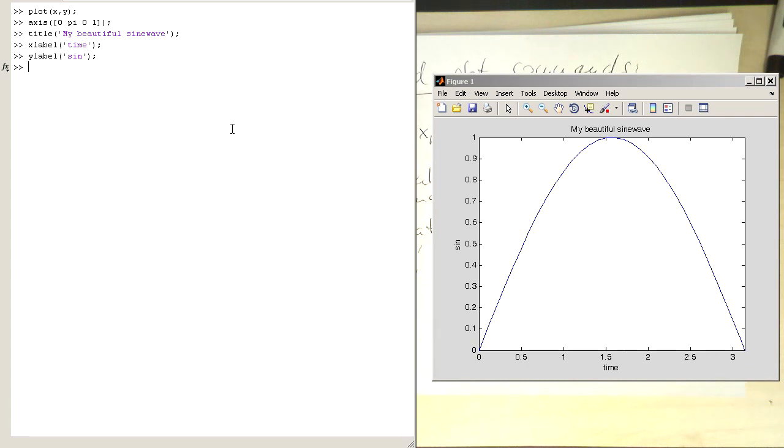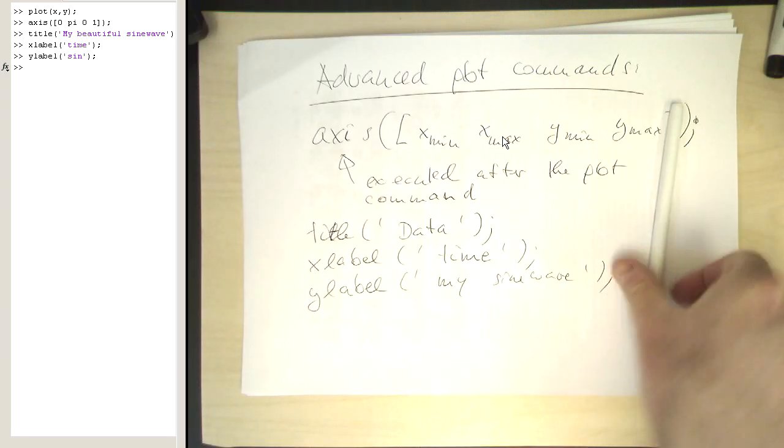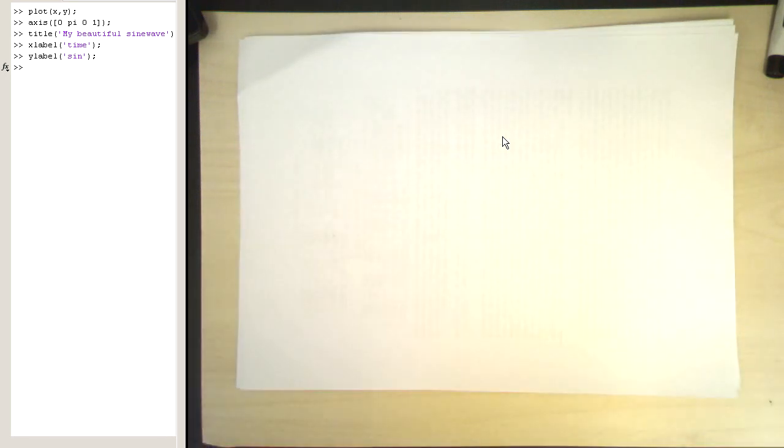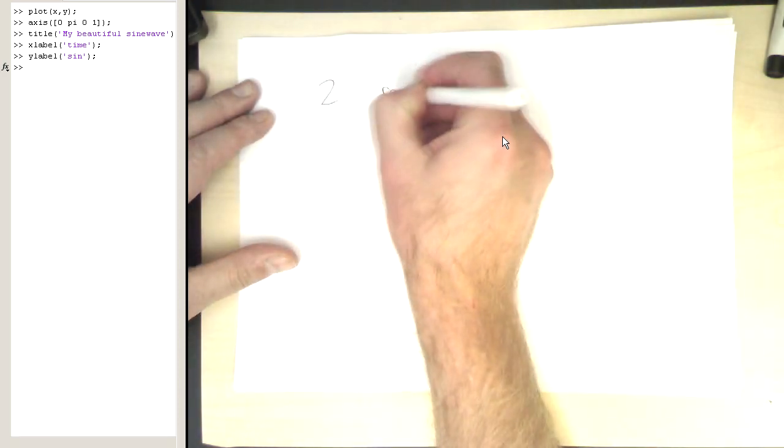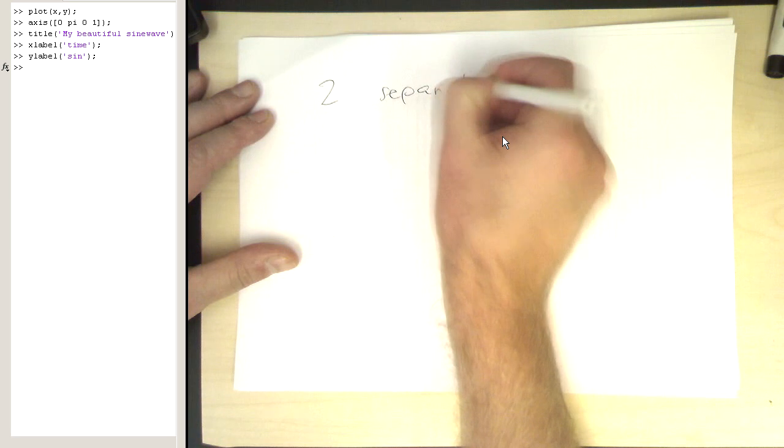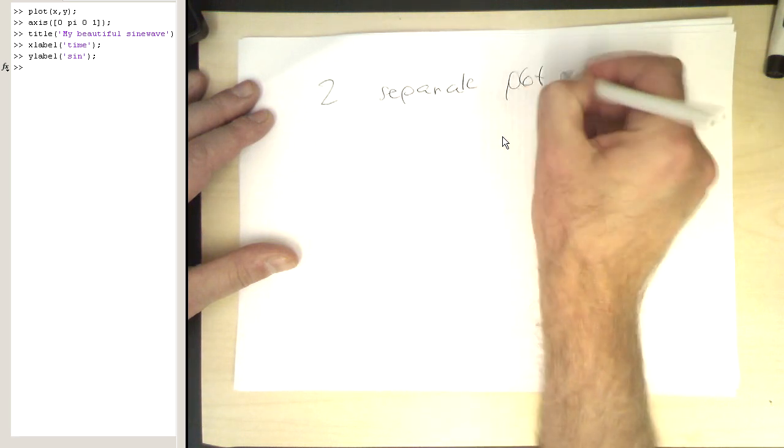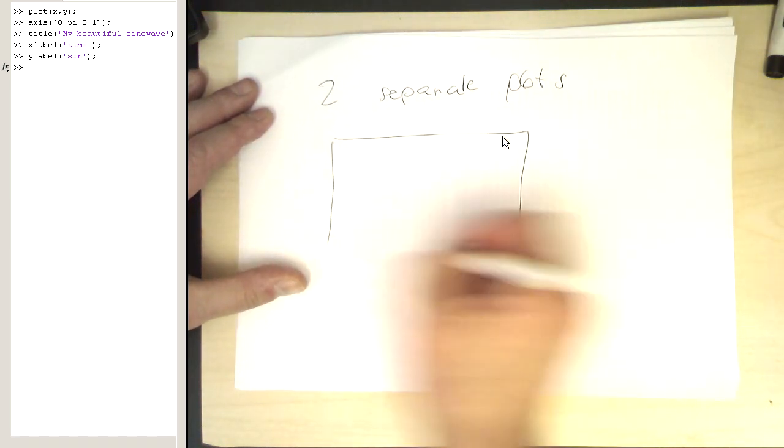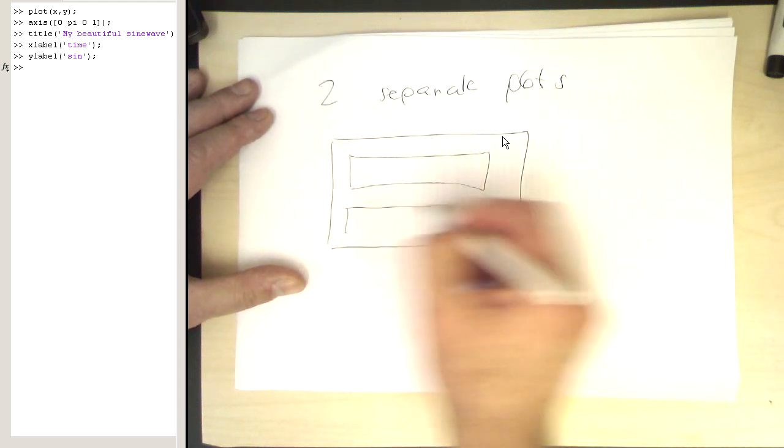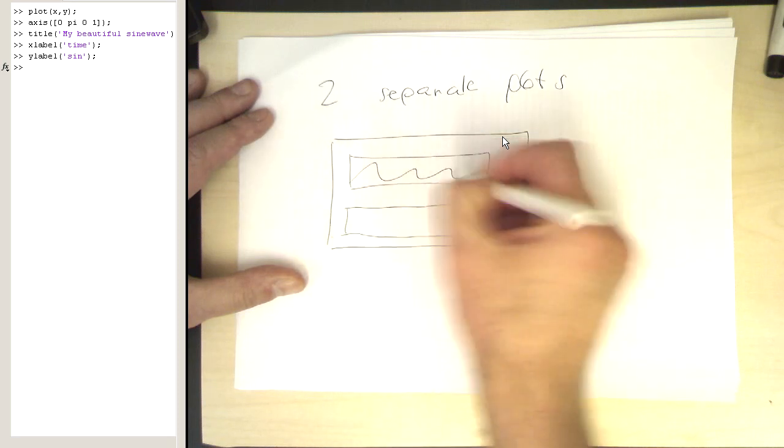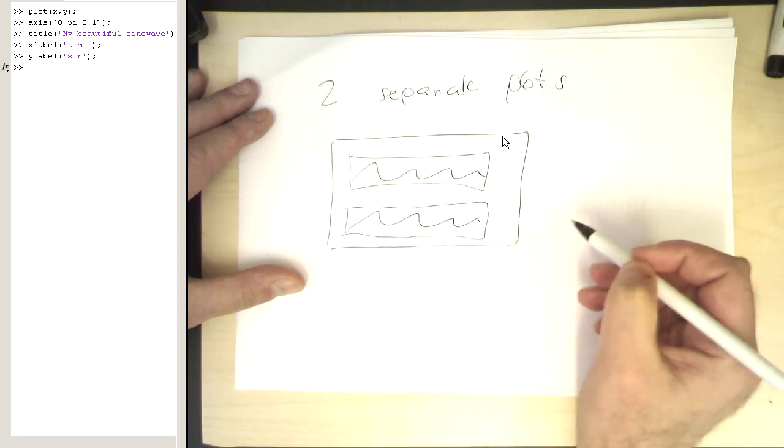So now what we also can do, imagine we would like to create two separate plots. Yeah so let's just take a new sheet and imagine we would like to create two separate plots in this form, that we have one plot here and another plot here. So how would we do that?